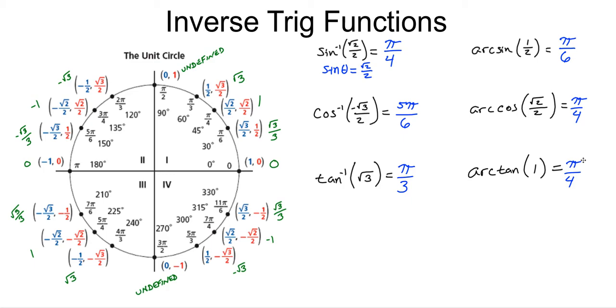This is how we use our knowledge of the unit circle and restricted domains to figure out what each of these values will be — and why we only get one value, not two or more.